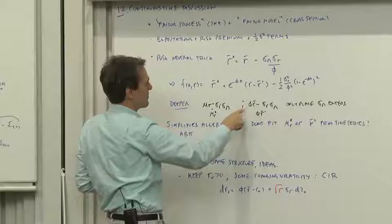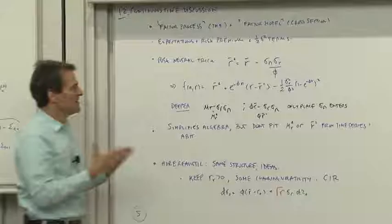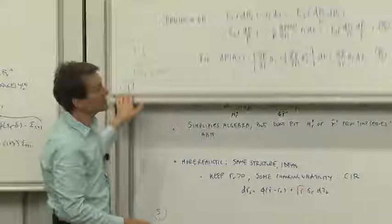We will see in the setup of the model, everywhere the mean shows up and the market price of risk show up, they show up in the same place, so you can unite them if you feel like it. Let's go see where that is.